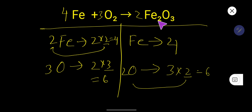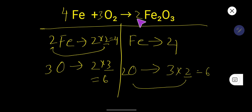So 4 iron equals 4 iron — this is the balanced equation. At last, you have to use an arrow sign. Thank you for viewing this video, be well.